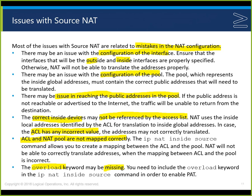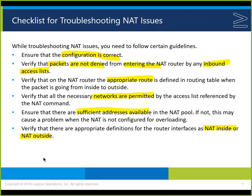The overload keyword says: even if using dynamic NAT, if we run out of addresses, go into port address translation. Port address translation uses a single IP address with multiple ports, creating sockets that uniquely identify locations. The overload keyword ensures that the configuration is correct. Also verify that packets are not being denied from entering the NAT router by an inbound access list.